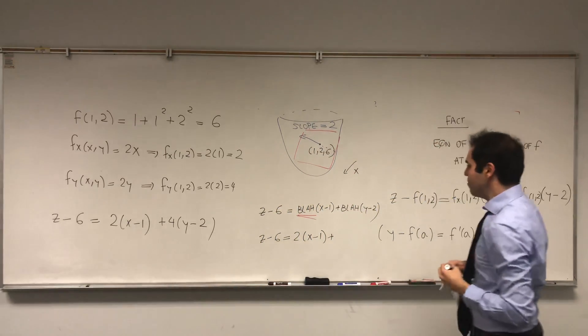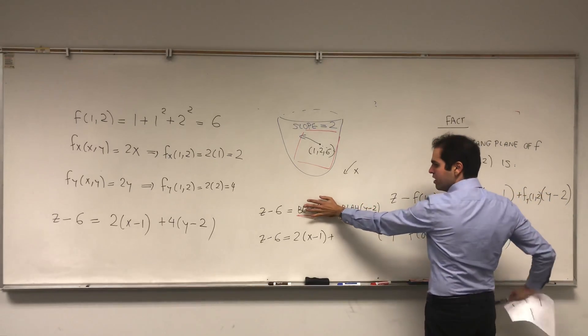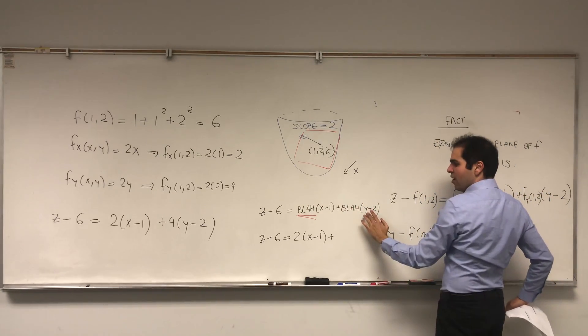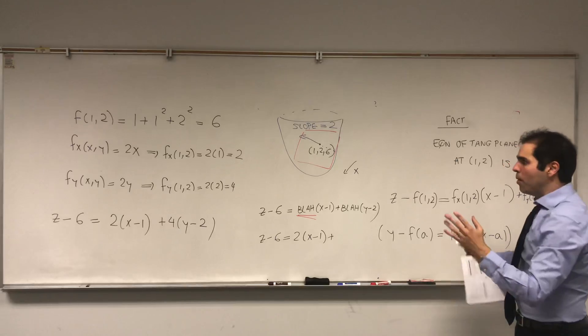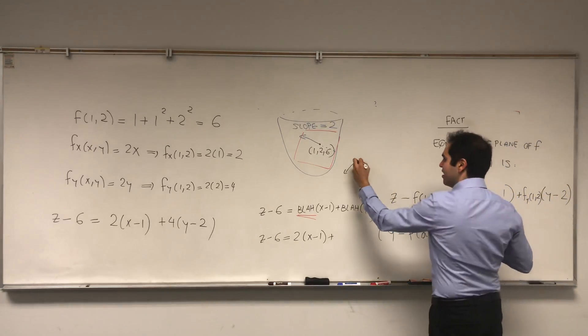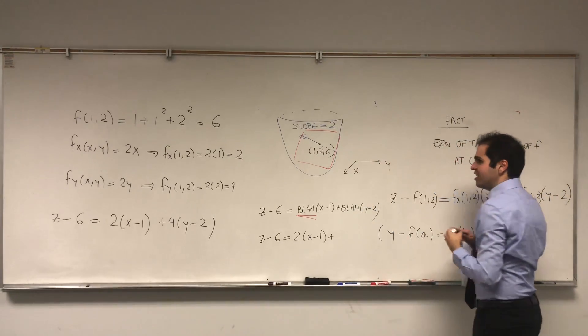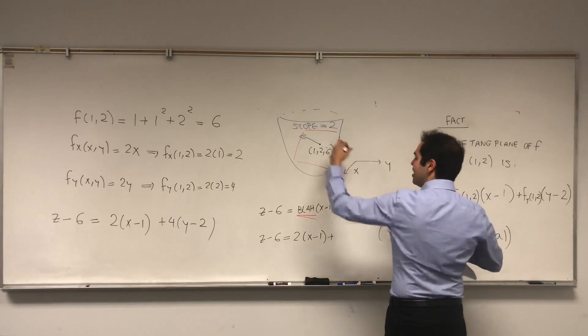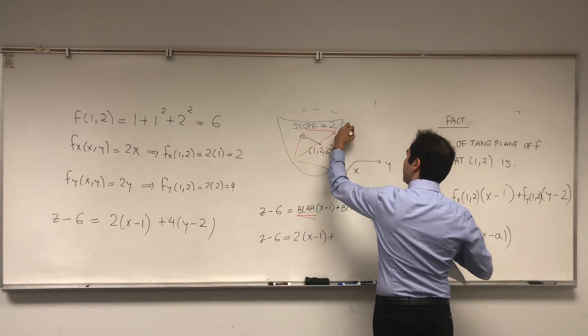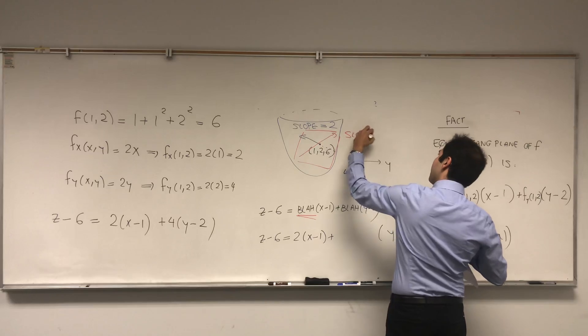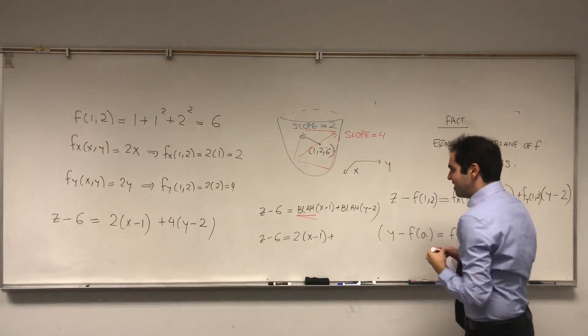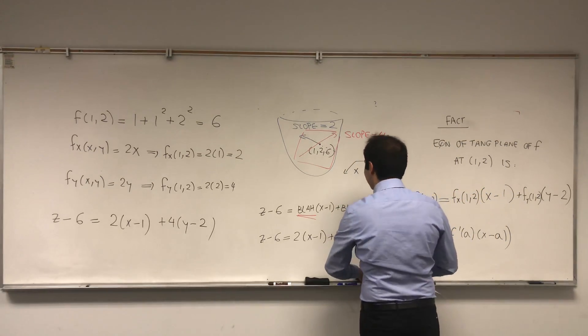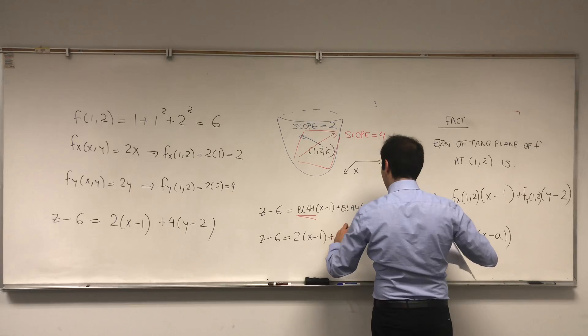And then what is the second block? If you kind of ignore this equation, what this becomes is the slope in the y direction, which is in this direction. And what we know from here is that the function kind of slopes up in the y direction. That's why the second block is just 4(y - 2).